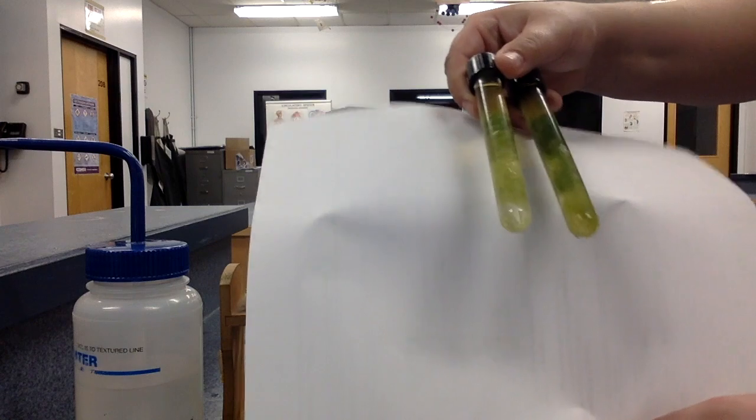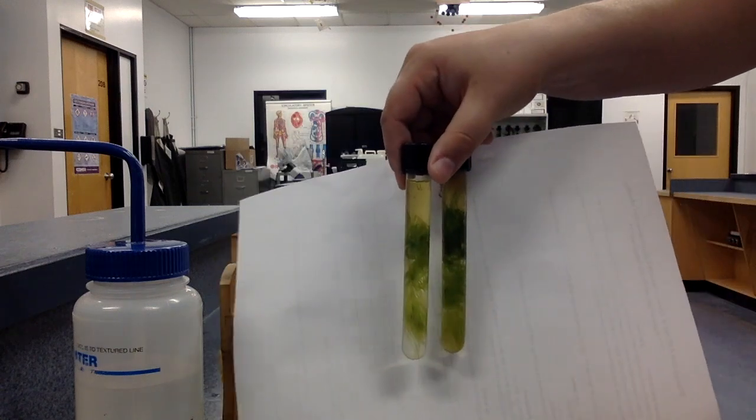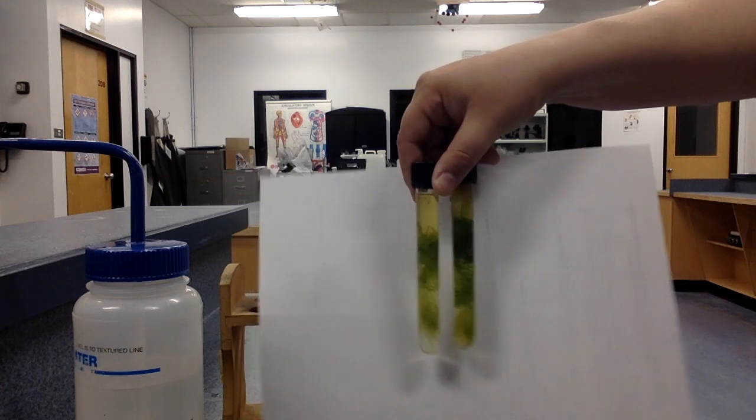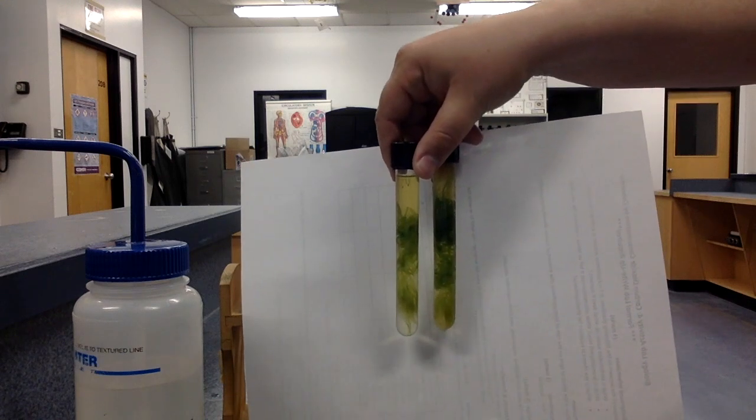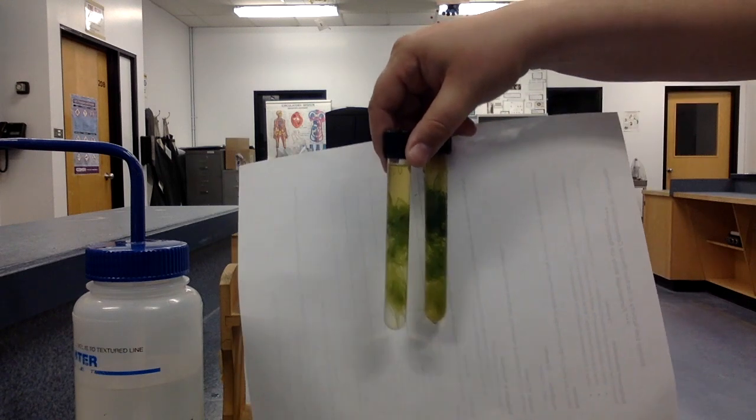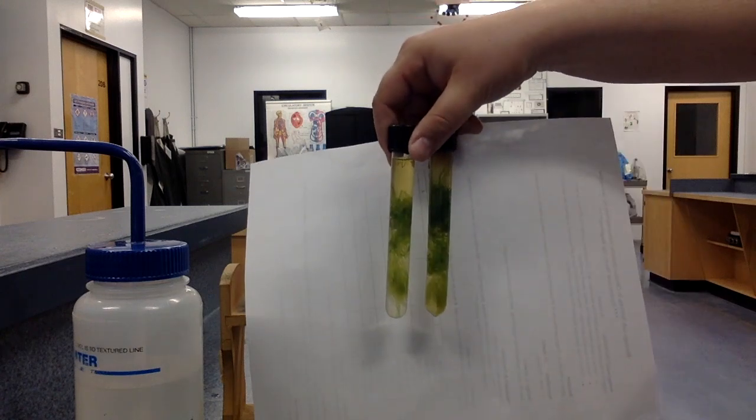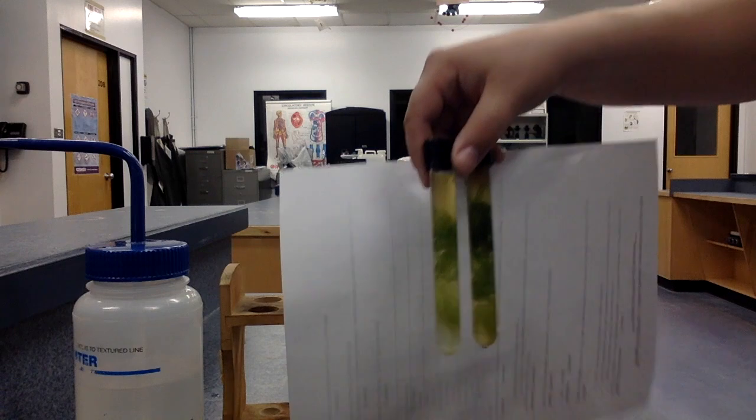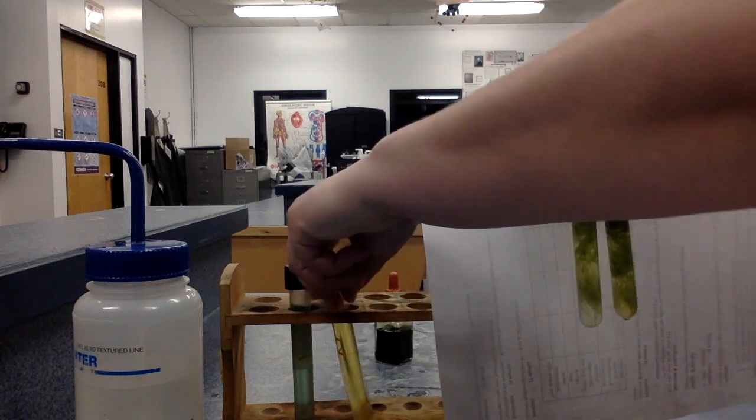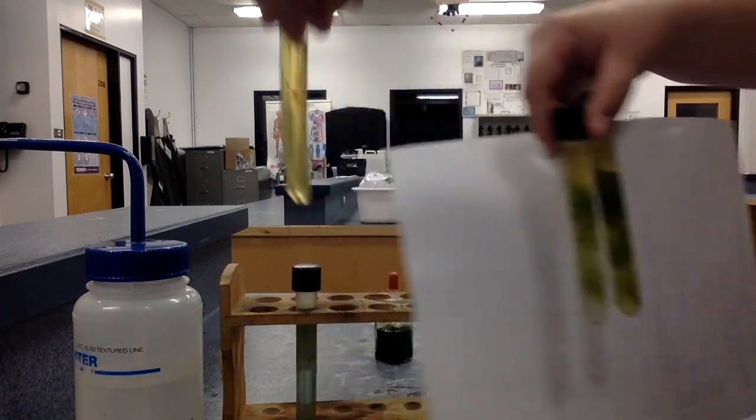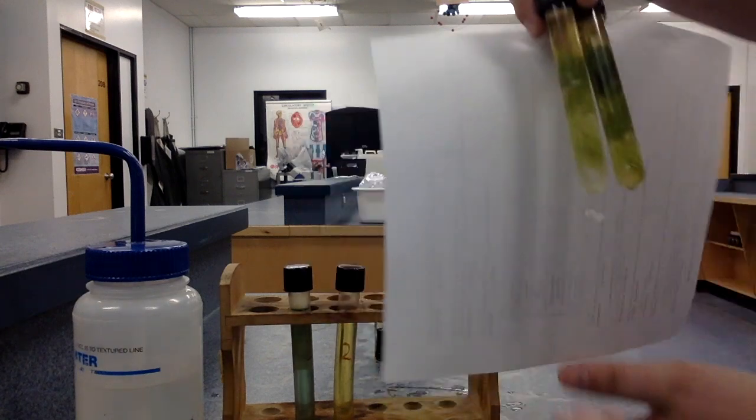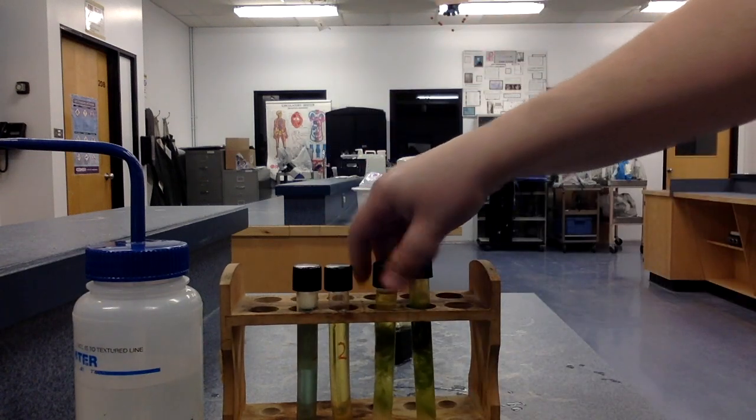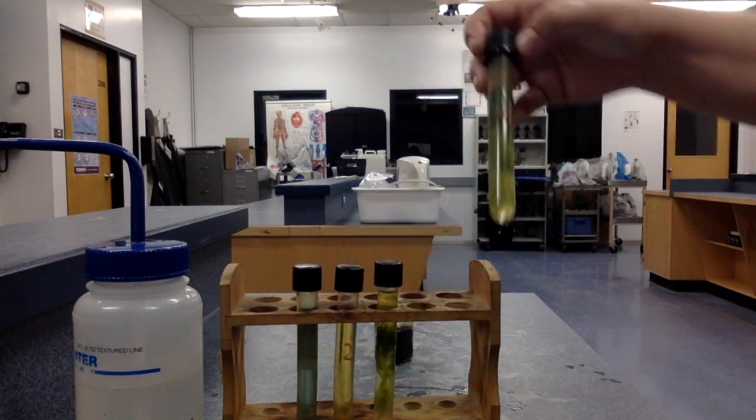Test tubes three and four have exactly the same thing in them. It is distilled water, bromothymal blue, we've got some club soda, some of the carbonated water in there, and we also have a bit of our hornwort plant. I've mixed it all up and you guys can see that these ones along with test tube two are all yellow to begin with. Now the only difference between test tube three and test tube four is that I'm going to cover test tube four.